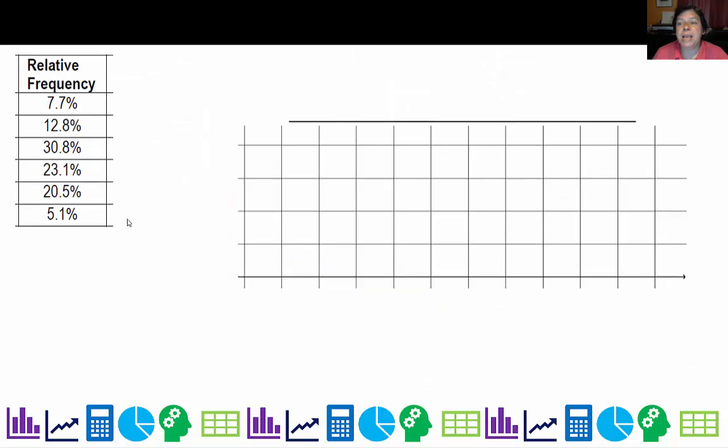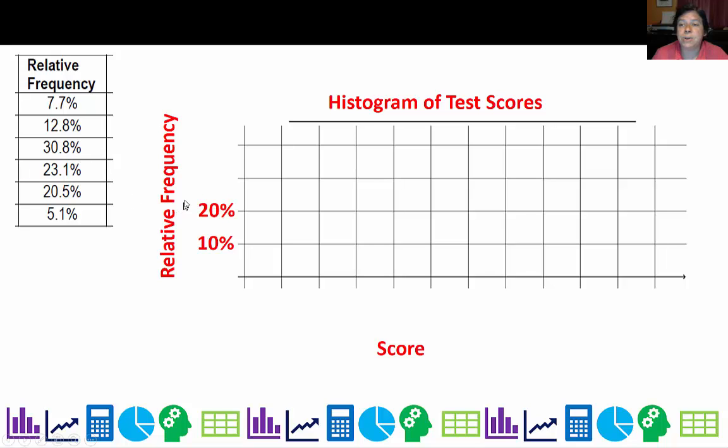So let's go ahead and do a relative frequency histogram. I probably should have said relative frequency up here, but I'm going to take care of it with this vertical axis here. Then I have score, and the maximum value here is 30.8, so I'm going to go to 30. It wouldn't be bad if I put 40 there.